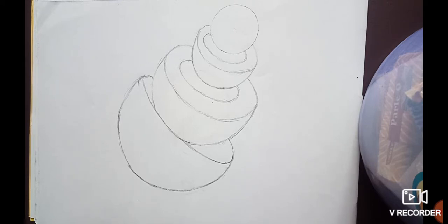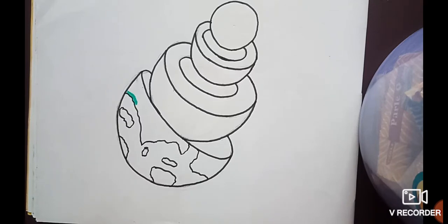So first is the inner core, then outer core, then mantle, then the crust.